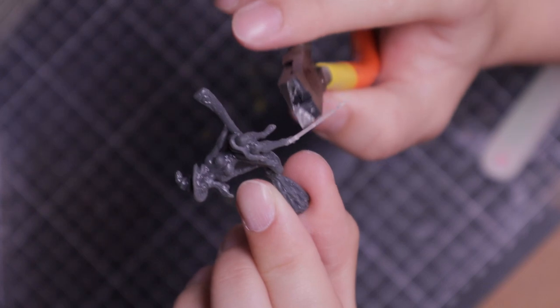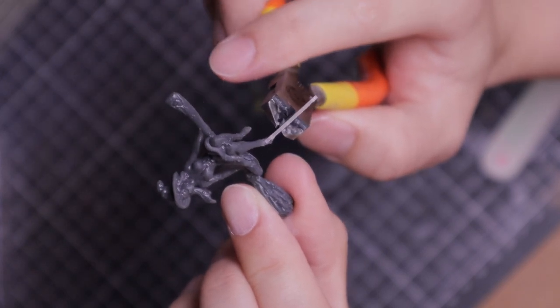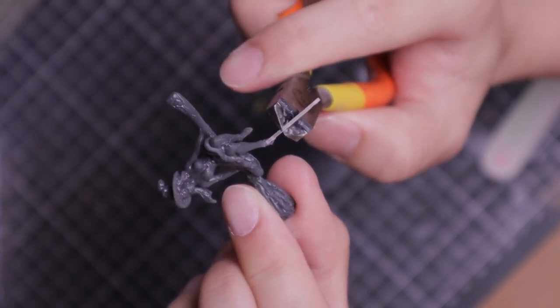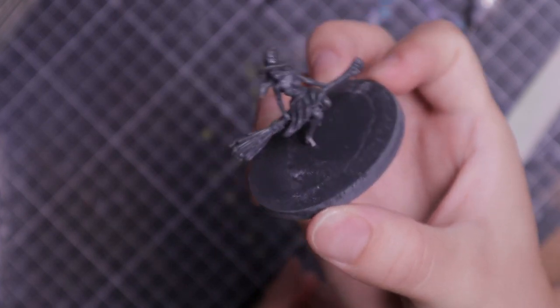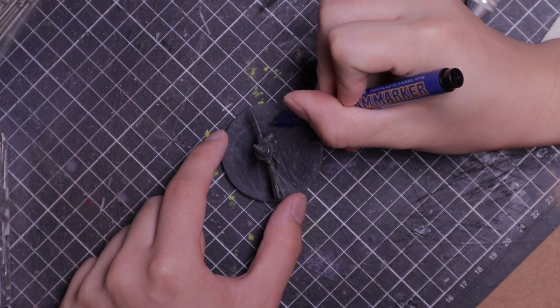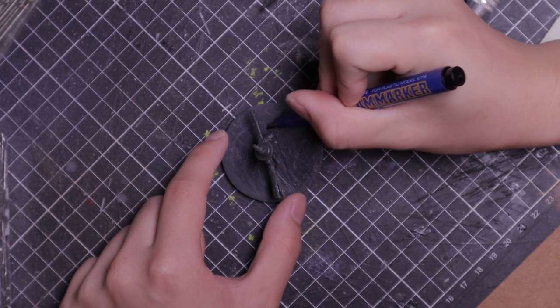Snip off the pin so that it fits closer to the base, but leave some extra material just in case. Then dry fit the mini onto the base. Once I got the mini in the right orientation, I marked it out as a reminder.